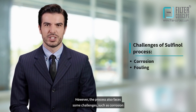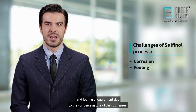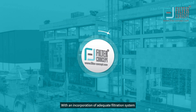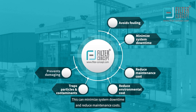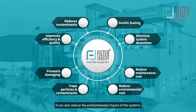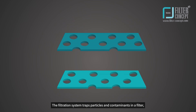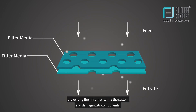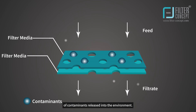However, the process also faces some challenges, such as corrosion and fouling of equipment due to the corrosive nature of the sour gases. With an incorporation of adequate filtration system, one can avoid the fouling of downstream equipment. This can minimize system downtime and reduce maintenance costs. It can also reduce the environmental impact of the systems by reducing the amount of contaminants released into the environment. The filtration system traps particles and contaminants in a filter, preventing them from entering the system and damaging its components. This helps to improve the efficiency of the system and the quality of the output, while also reducing the amount of contaminants released into the environment.